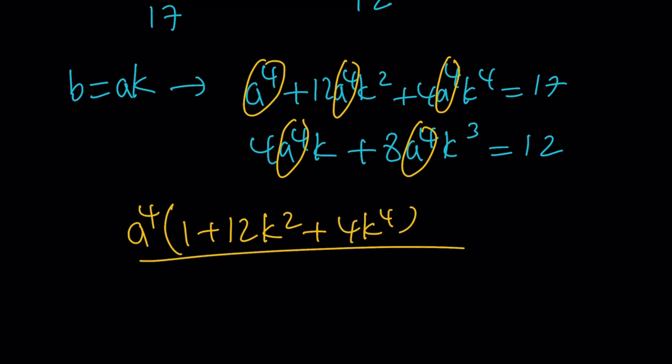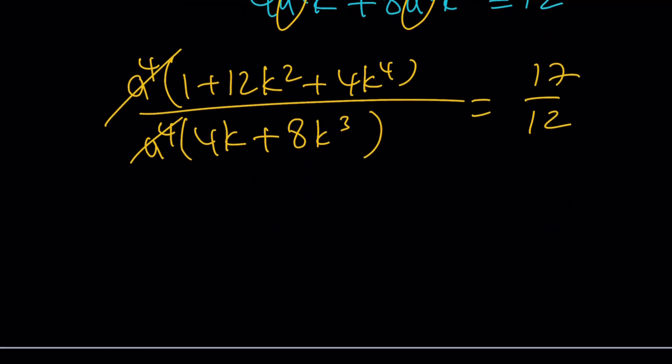So we can divide the first equation by the second. That's going to give us something much nicer. Cancel out a to the 4th.